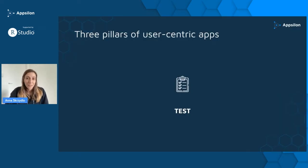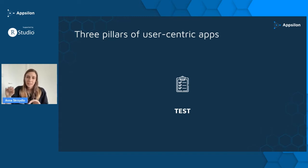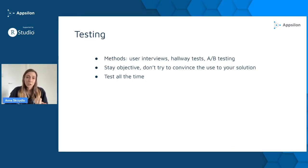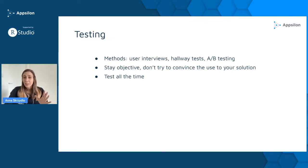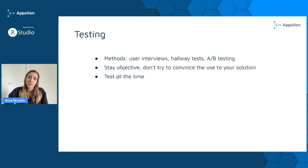Let's move to the next pillar: testing. By testing here I don't mean unit tests, performance tests, or other technical tests — those are very important, but the tests I mean here are usability tests. Some methods include user interviews, hallway tests — where you ask random people in the hallway to test your application and give feedback — and AB testing, where you prepare two versions of a UI and randomly distribute them to people, then compare scores like number of successful transactions.